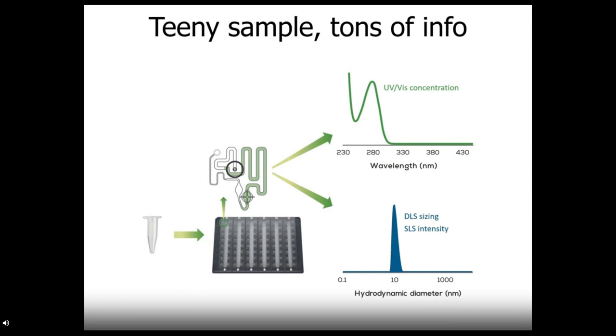Stunner combines UV-Vis for concentration and DLS for sizing. SLS intensity data is also read during a DLS experiment. So low-volume, high-throughput DLS to get the size and PDI data you need, while quantifying DNA or RNA concentration. All this is done in a 96-well plate-based format that powers high-throughput analysis, giving you all this data on 96 samples in one hour.